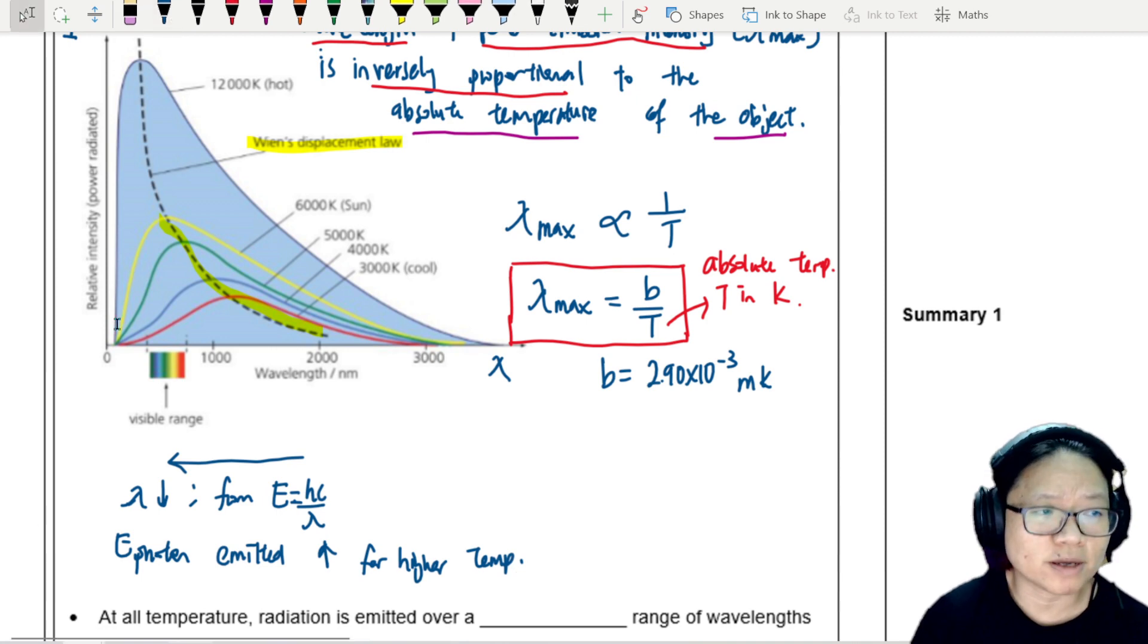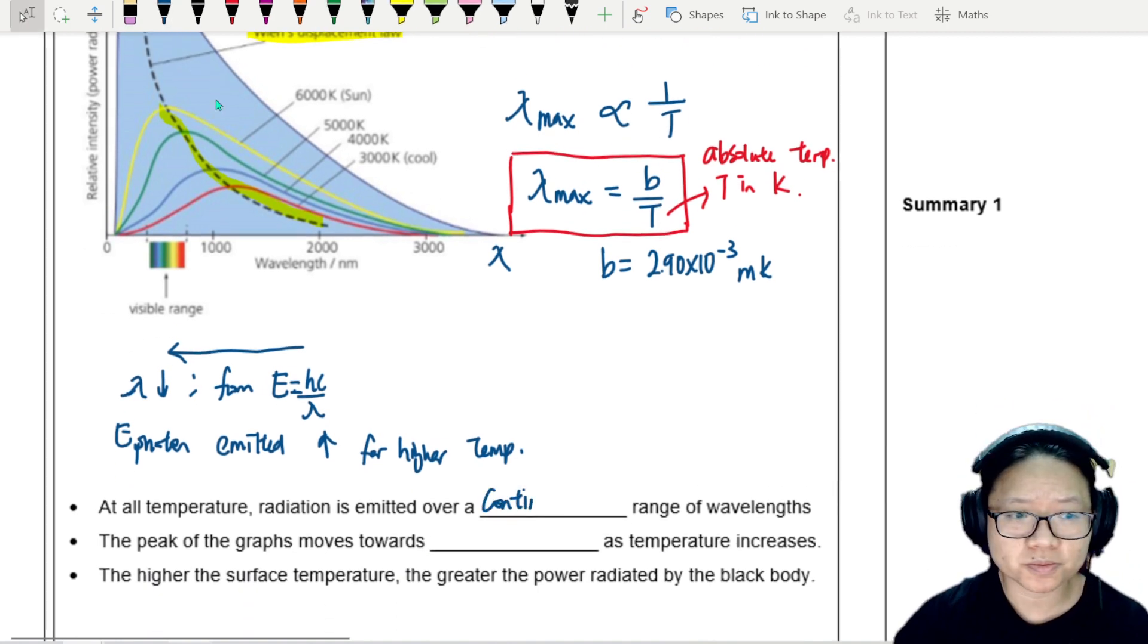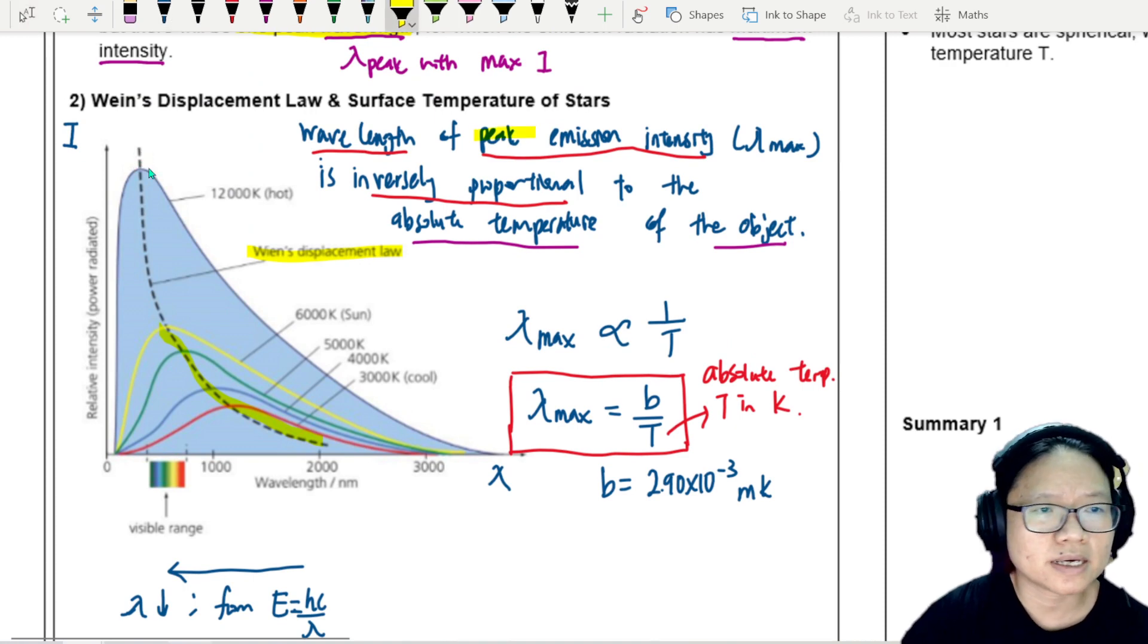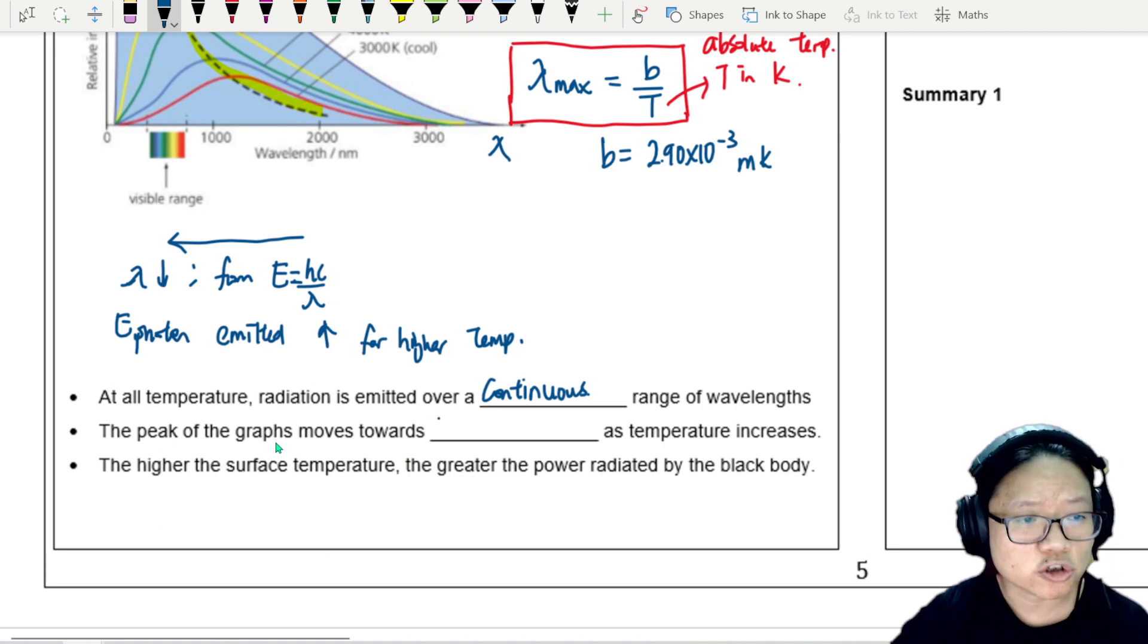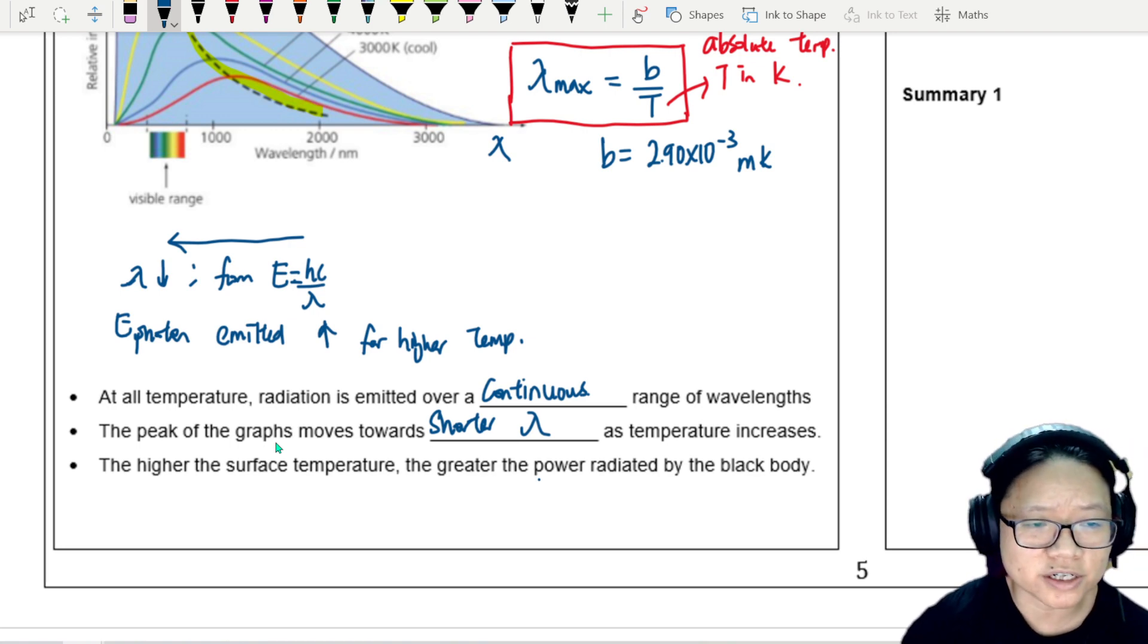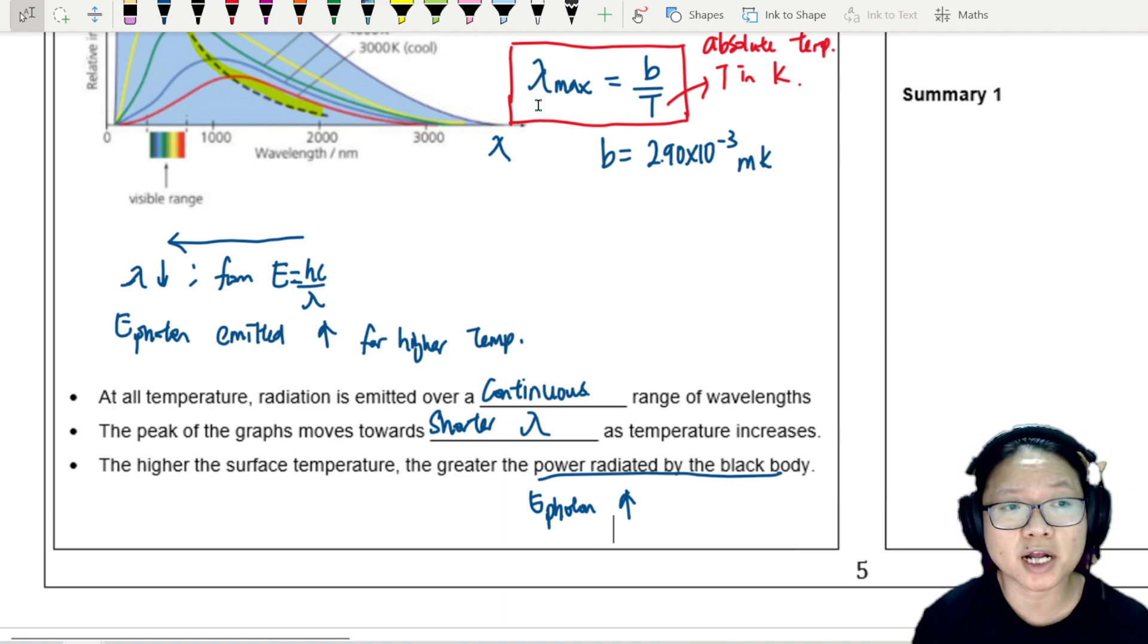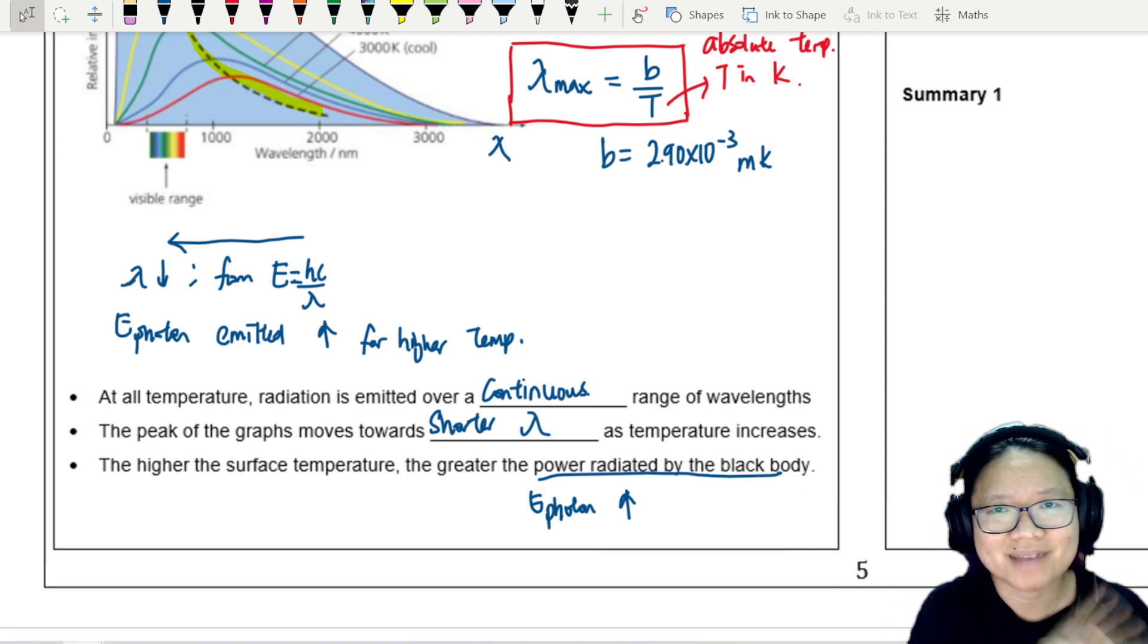So although at all temperatures, we get a range, it's not that we only get one number, we get a range of numbers. So this is a continuous range. But we focus on the maximum, this maximum peak emission intensity. We look at the peak of these curves. So the peak of the graph will move towards shorter wavelengths as temperature increases. And at higher surface temperature, the greater power is radiated by the black body, which is also represented by the energy of the photon increasing. So remember, at the end of the day, electromagnetic radiation, still photons like particles. So based on your value of different wavelength of light that we can capture, we can actually use this relationship to compare with the other stars that we already know to calculate the temperature. And that's your Wien displacement law.